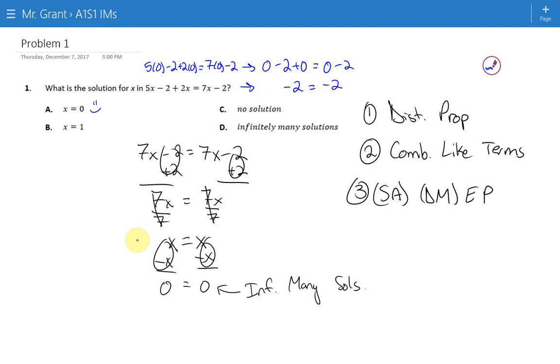But the hard part with plugging a number in, with doing guess and check, is we need to make sure none of the others work, too. So let's also try x equals 1. We get 5 minus 2 plus 2 equals 7 minus 2. 5 minus 2 is 3, 3 plus 2 is 5, 7 minus 2 is 5. The left side equals the right here. As soon as we have two answers that work, we know that's got to be infinitely many solutions.